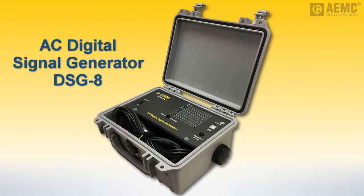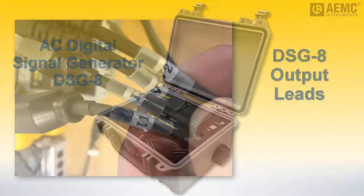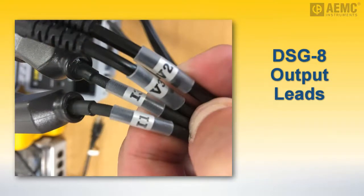In this video, we will connect the Model 8336 to the AEMC AC Digital Signal Generator Model DSG-8. This device simulates waveforms for AEMC PowerPad, PowerPad 3, and PEL series instruments. The DSG-8 can create simulations for any AC distribution system supported by these instruments, including capturing transients, inrush, and alarm events. The DSG-8 output leads are labeled to ensure correct connection to the Model 8336 inputs.